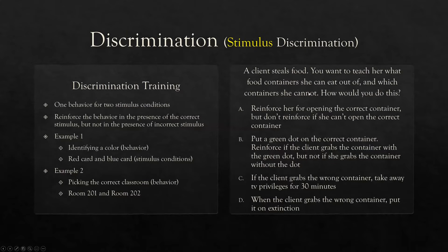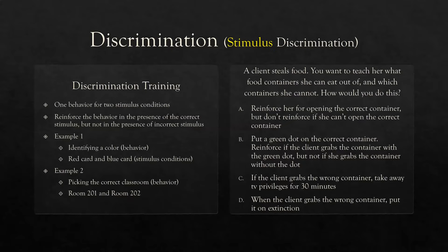Practice question: a client steals food and you want to teach her what food container she can eat out of and which she cannot. This comes straight from the Cooper book — a study on teaching a girl to discriminate between containers by putting labels on them. So how would you do this? We're going to try some sort of discrimination method — we want to teach stimulus discrimination.